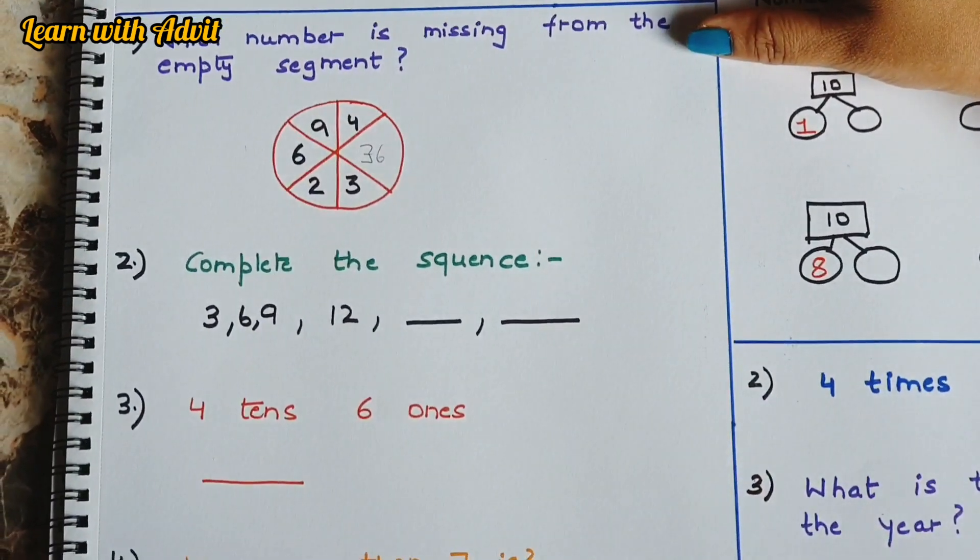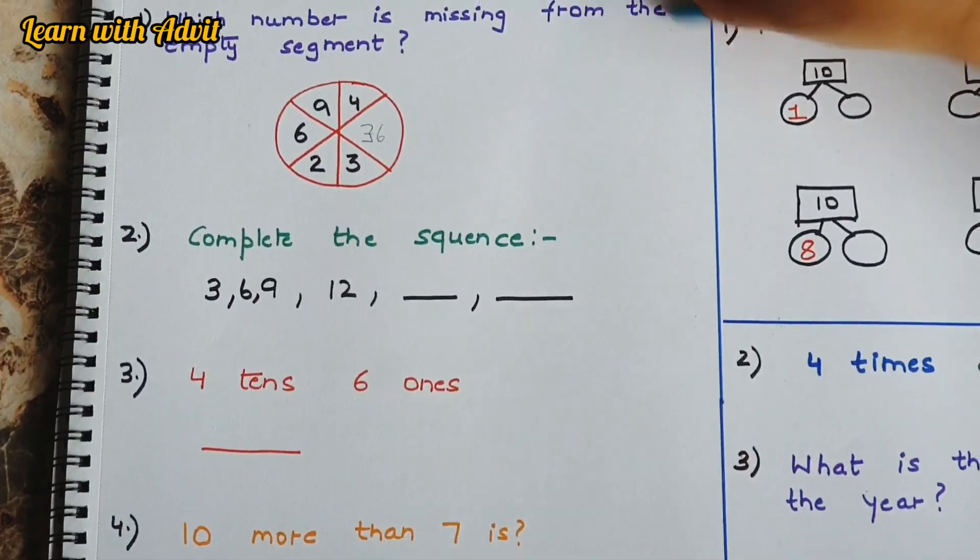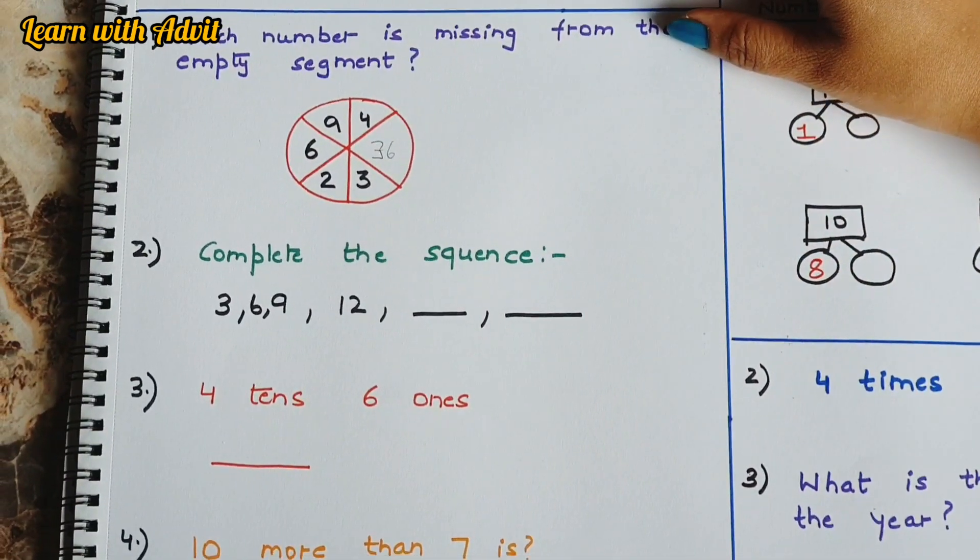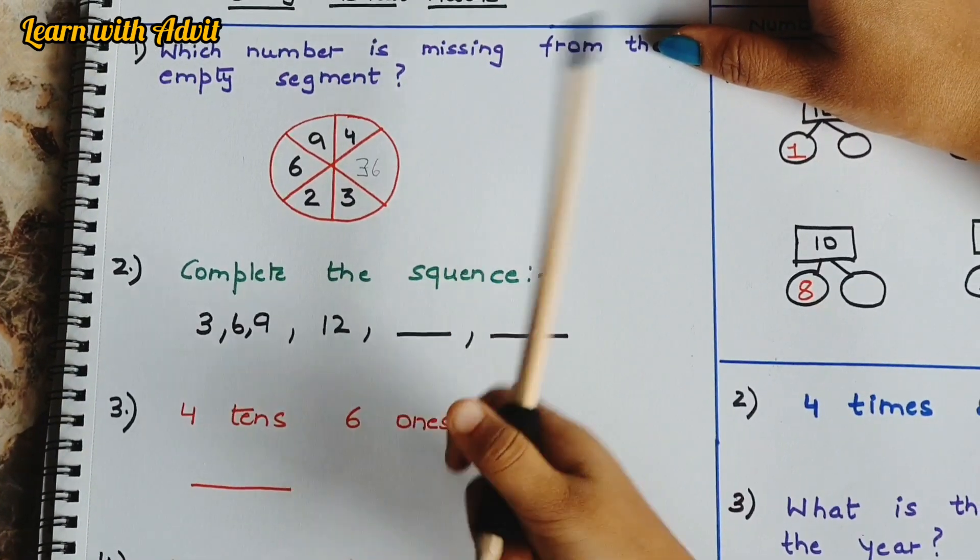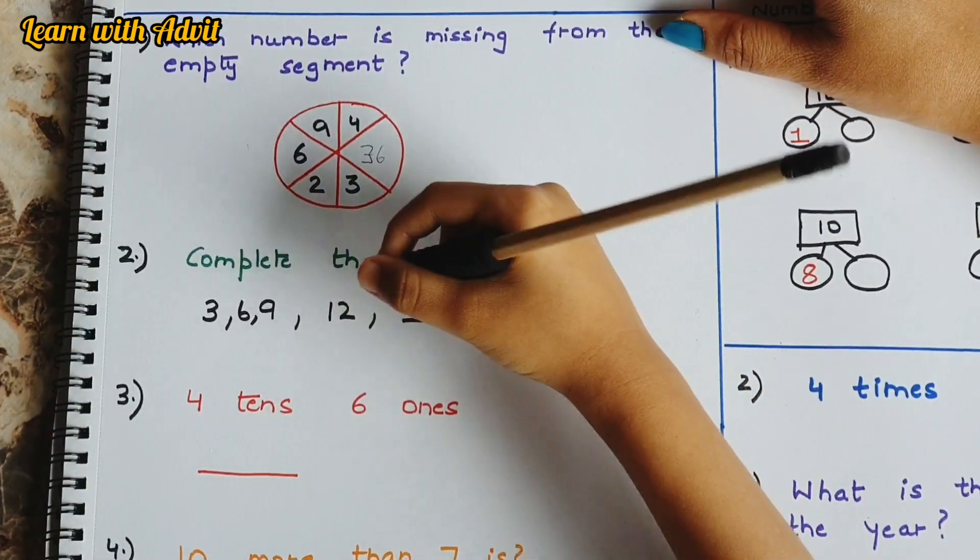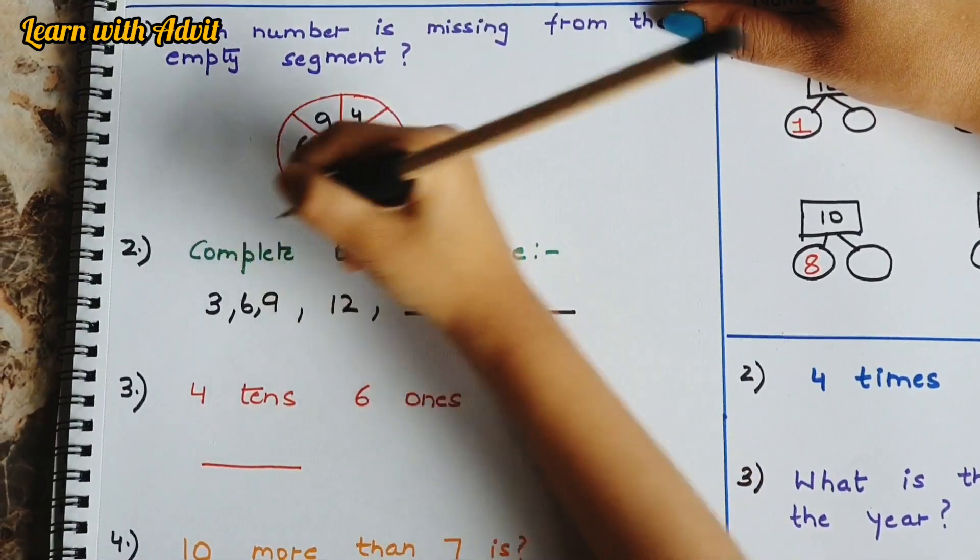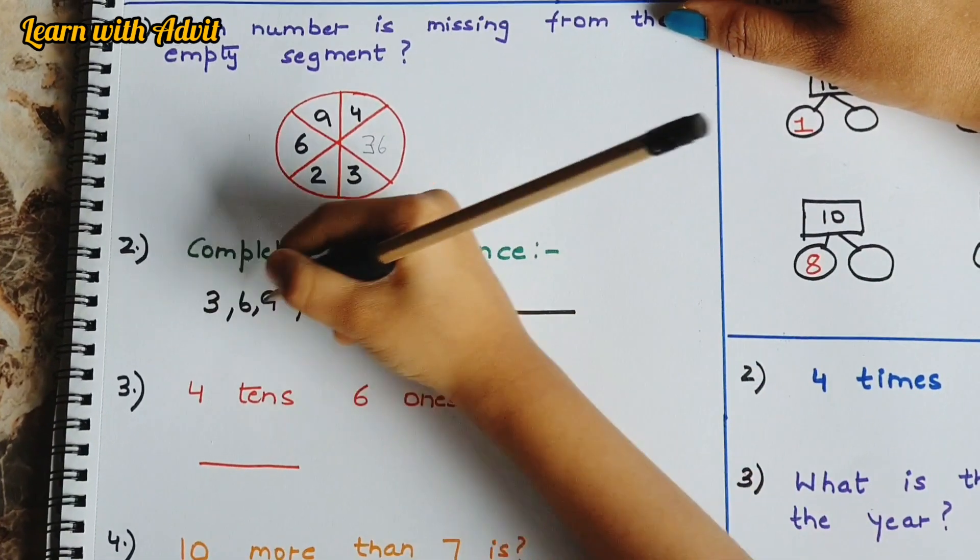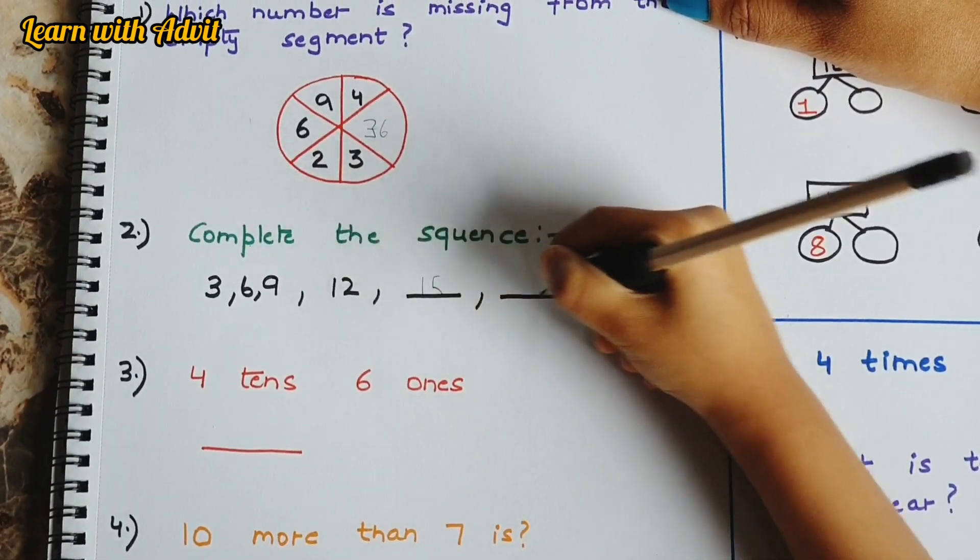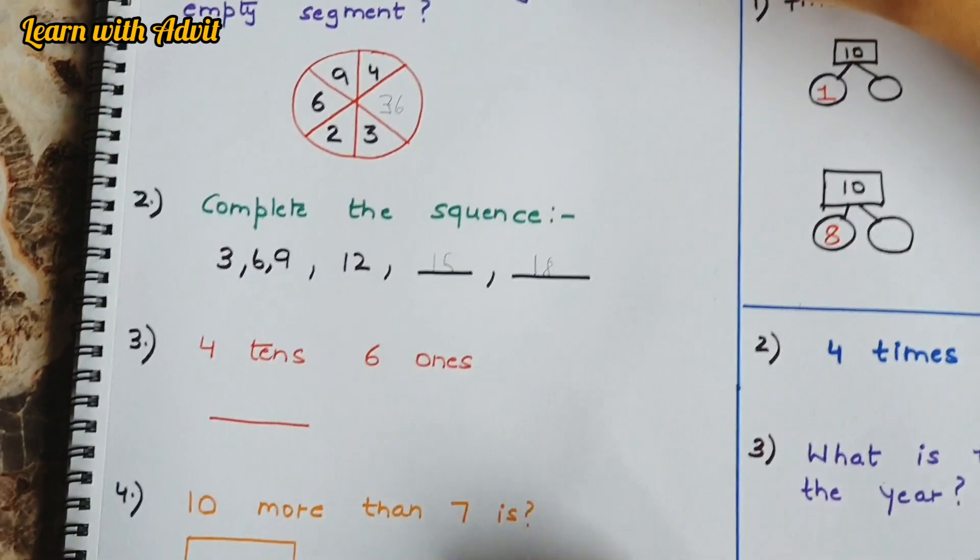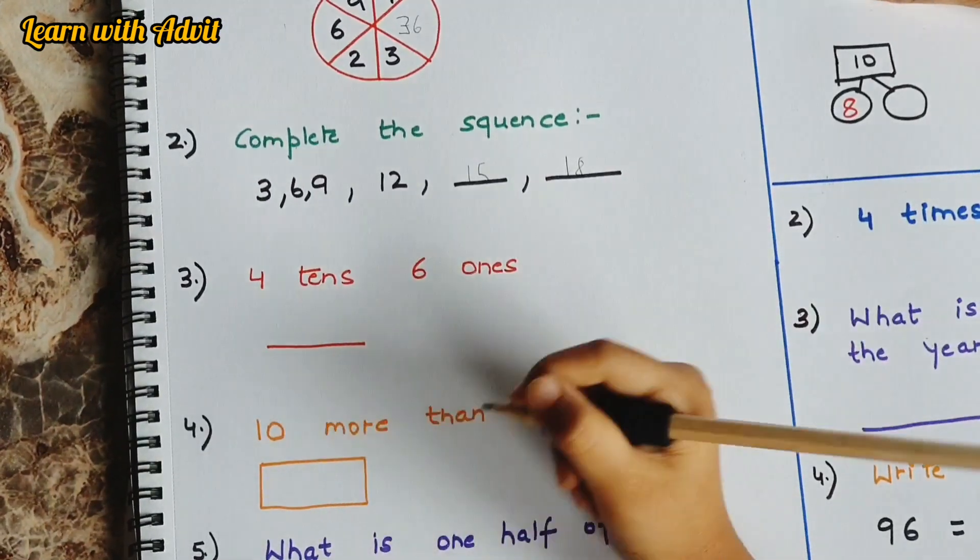Complete the sequence. Let's skip counting the number. Now we have to multiply and add it. Very good. Now complete the sequence: 3, 6, 9, 12, 15, 18. Very good. 4 tens and 6 ones number is 46.